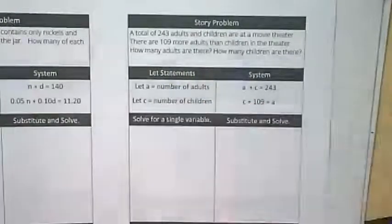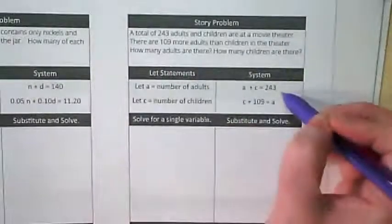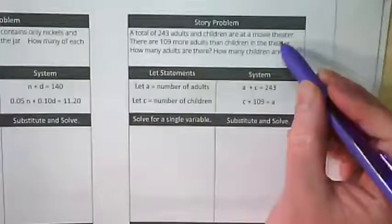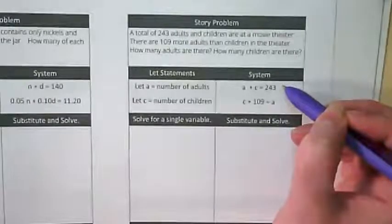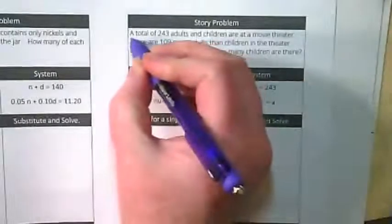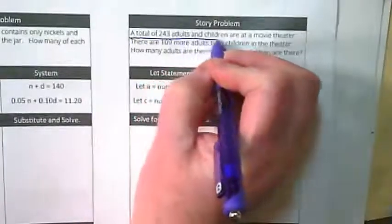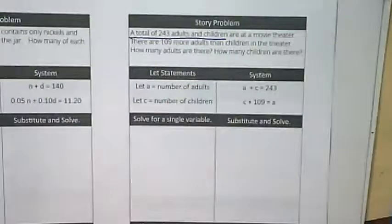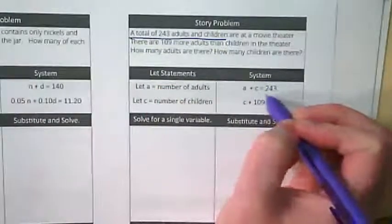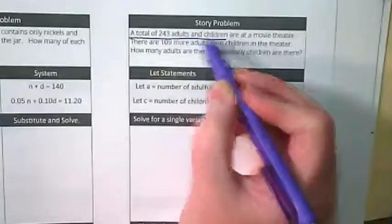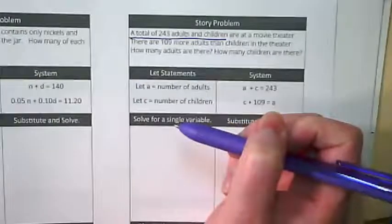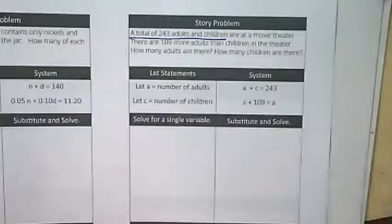Let's look at the equations. First equation is A plus C equals 243. Where in the word problem did this equation come from? It says a total of 243 adults and children. The total of 243 gives us the equals 243, and the adults and children gives us the A plus C. Let me see a sign that you understand where that came from. Okay.